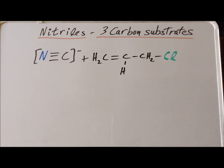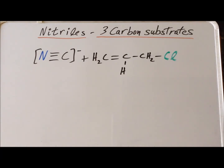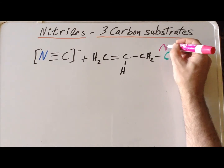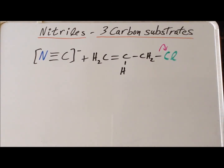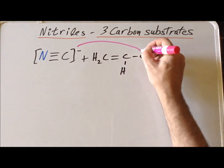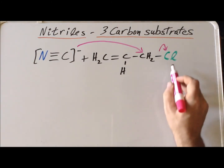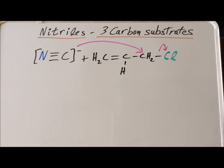Now, suppose that we react cyanide ion with an allylic substrate such as 3-chloropropene. Cyanide is our nucleophile and recall that it attacks from the carbon end of the carbon-nitrogen triple bond. Our leaving group is chlorine as chloride, so this bond breaks heterolytically so that chlorine leaves with the electron pair. The nucleophile attacks the alpha carbon, displacing chloride in a synchronized one-step process, which we call the SN2 reaction.